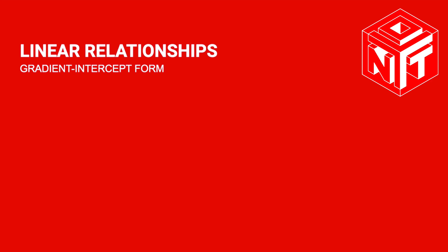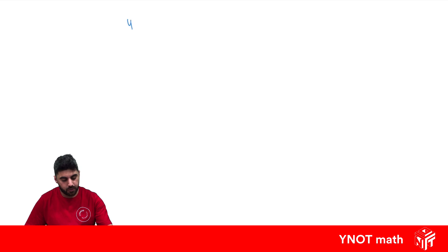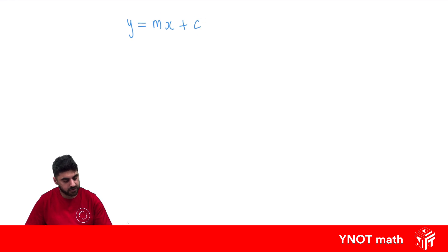Gradient Intercept Form. So far we've seen a lot of relationships, especially when we're finding them with tables of values, that y equals some number times x plus another number. We're going to learn the significance of these numbers in terms of a linear relationship. Whatever number is in front of x is actually the gradient of the line, so it tells us how steep the line is going to be.